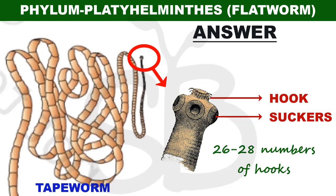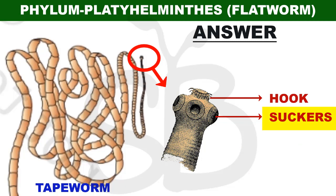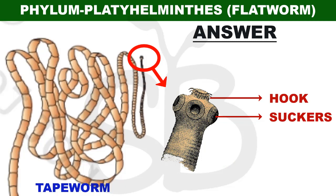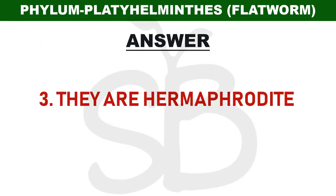There are 26 to 28 hooks. They are living inside the body. There are 4 suckers that are attached to the body. We cannot discuss a mouth with the tapeworm. This tapeworm is located in the intestine, and food particles in the intestine are absorbed through the body walls.